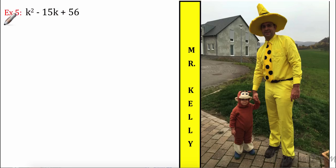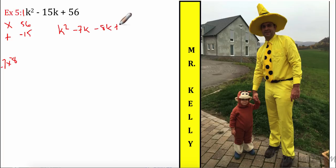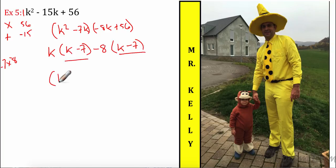Let's factor k² − 15k + 56. A times C: 1 times 56 is 56. I need two numbers that multiply to 56 and add to negative 15. I know 7 times 8 is 56, and negative 7 times negative 8 is positive 56, and they add to negative 15. So: k² − 7k − 8k + 56. Group: k(k − 7) minus 8(k − 7). Common factor (k − 7) gives us (k − 7)(k − 8).